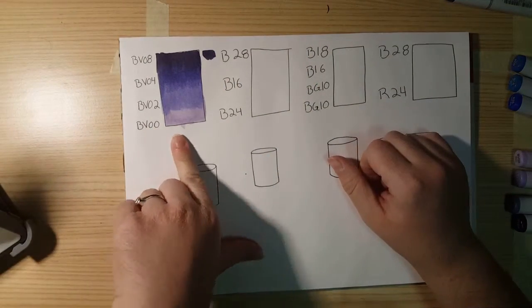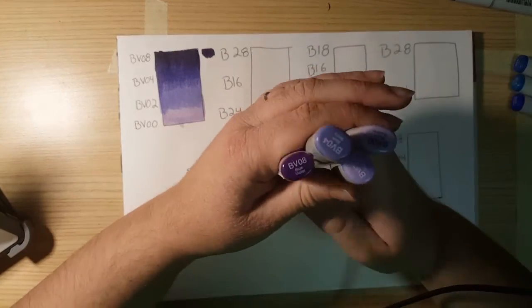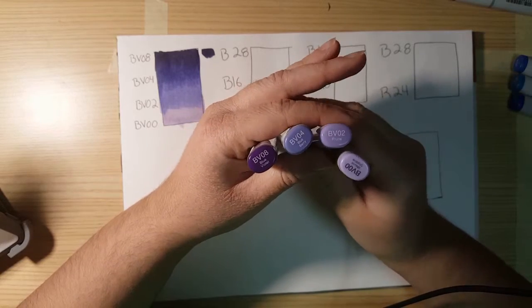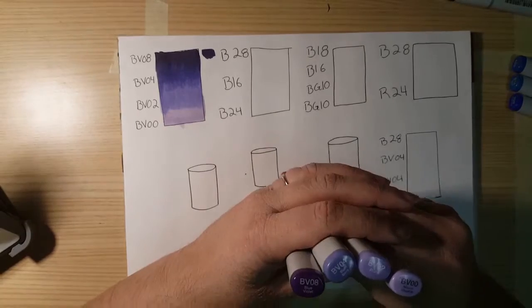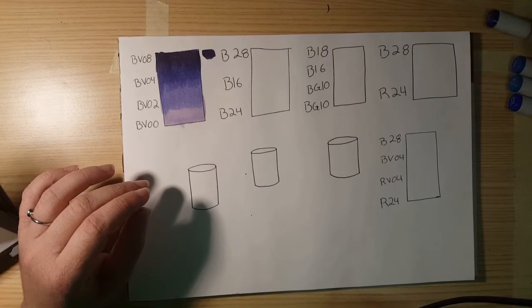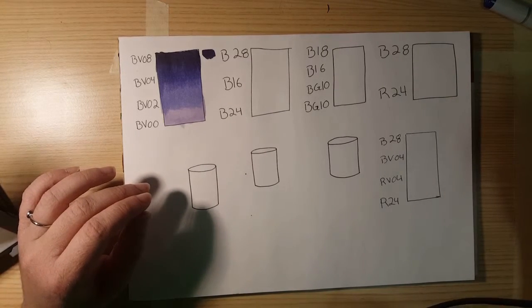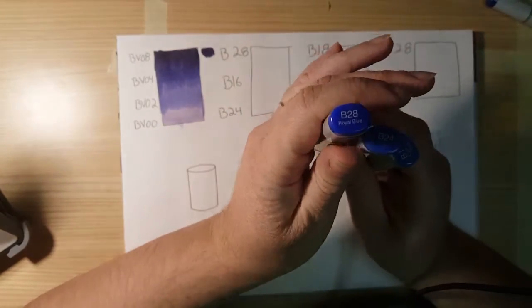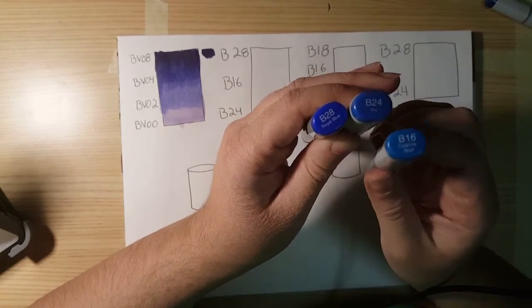So, now that is an example using colors all from the same level of brightness and from the same color family. Now what I'm going to show you is an example using colors that are a little bit different. I have with me B28, B24, and B16.